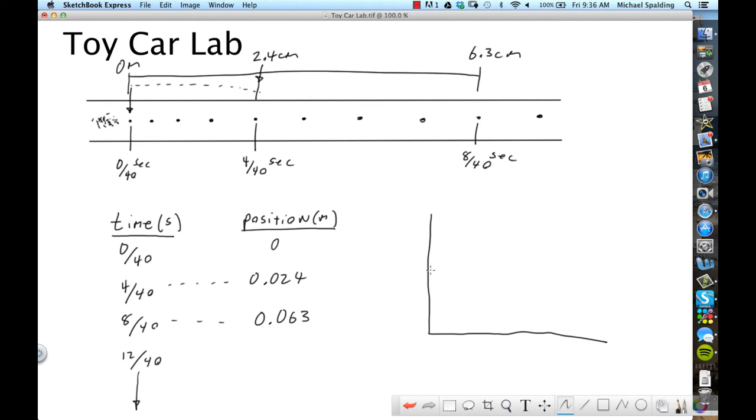All right. So you're going to have position on the Y and then time on the X. And by the way, whenever you have data where time is involved, time always goes on the X. Does anybody know why?